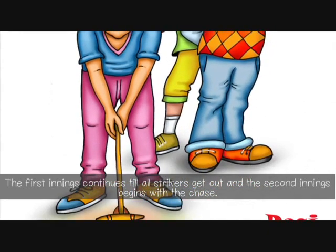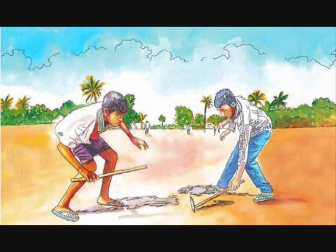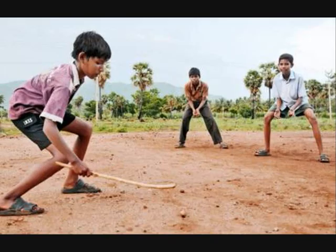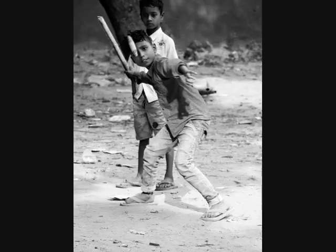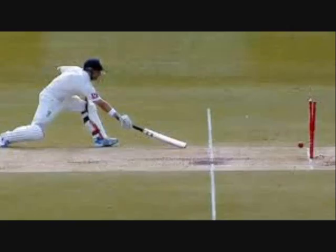The Gili becomes airborne after it is struck. If a fielder from the opposing team catches the Gili, the striker is out. If the Gili lands on the ground, the fielder closest to the Gili has one chance to hit the Danda, which has to be placed on top of the circle, with a throw similar to a run-out in cricket. If the fielder is successful, the striker is out. If not, the striker scores one point and gets another opportunity to strike. The team or individual with the most points wins the game. If the striker fails to hit the Gili in three tries, the striker is out, similar to a strikeout in baseball.